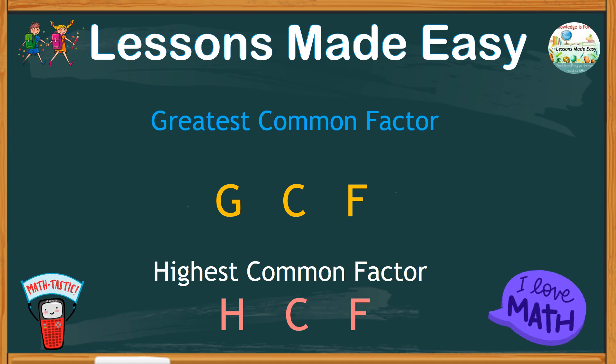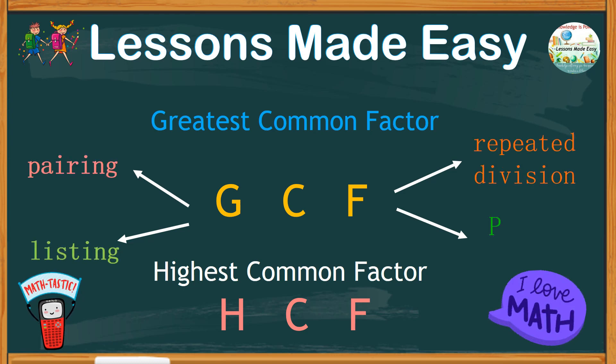There are many different ways to find the highest common factor. We can do this by pairing, listing, repeated division, and prime factorization. If you need help with prime numbers, you can check out some videos on this channel, and a link can be found in the description box below.